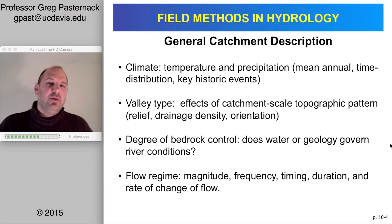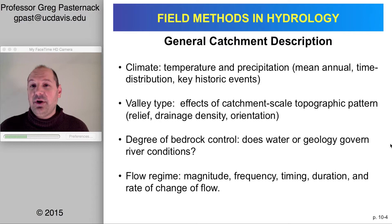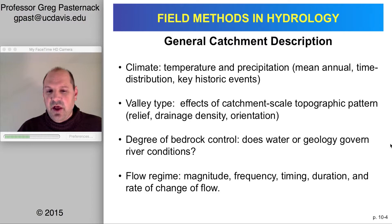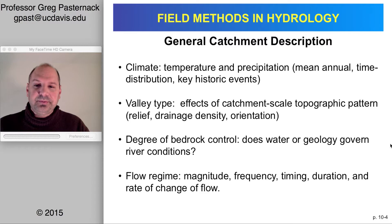Lastly at the catchment scale is the flow regime — related to climatic and weather-based drivers, but rather than studying precipitation data directly, we typically look at the discharge regime as presented in runoff. A stream gauging station in the system or a nearby watershed provides this data. We want to know not only the magnitude of flow, but also the frequency of a given event, its timing, duration, and rate of change of flow. Together these factors define the overall flow regime, which is part of the general catchment description for any stream characterization.